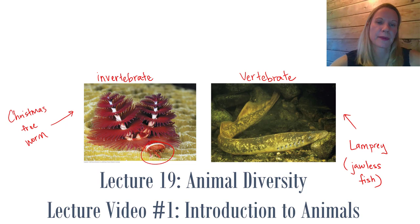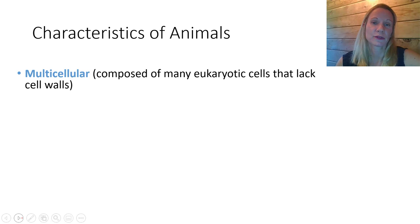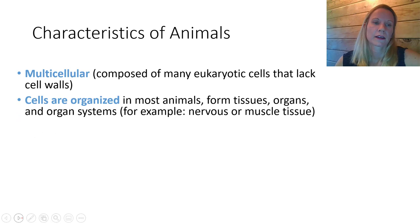To be an animal, these are multicellular eukaryotes that do not have cell walls. The cells within animal bodies are organized. In most animals, this forms tissues. Tissues are groups of cells that have a cooperative function. Those tissues can organize into organs and organ systems.